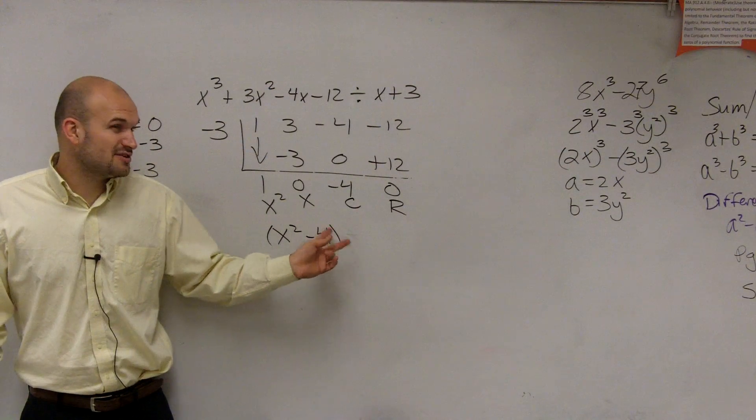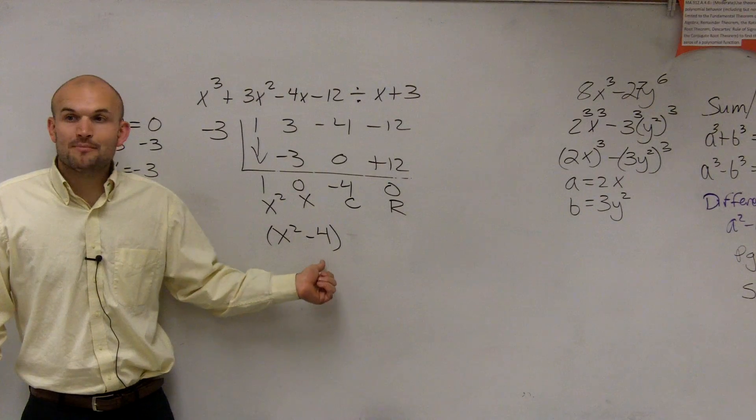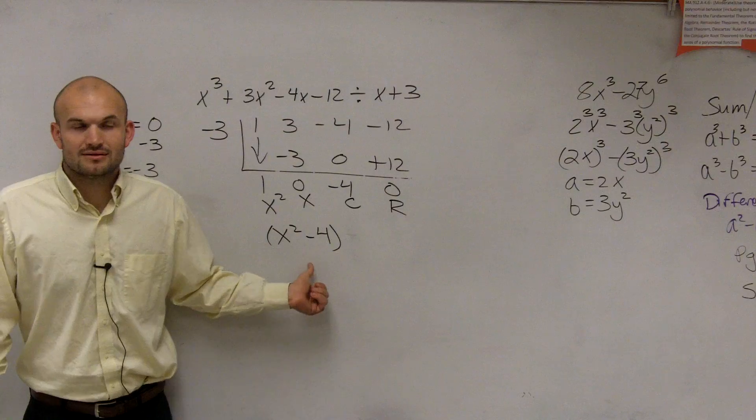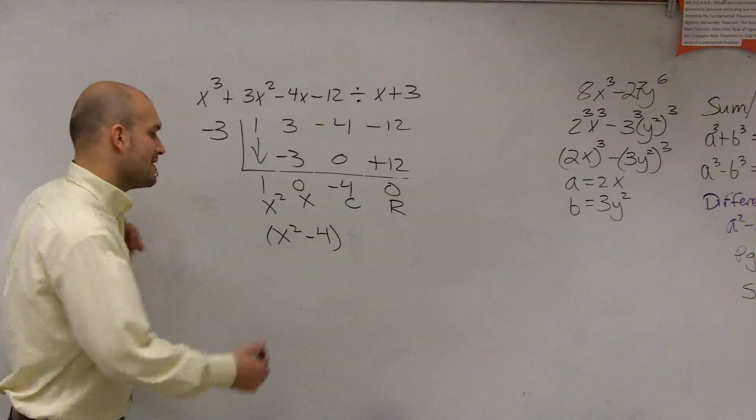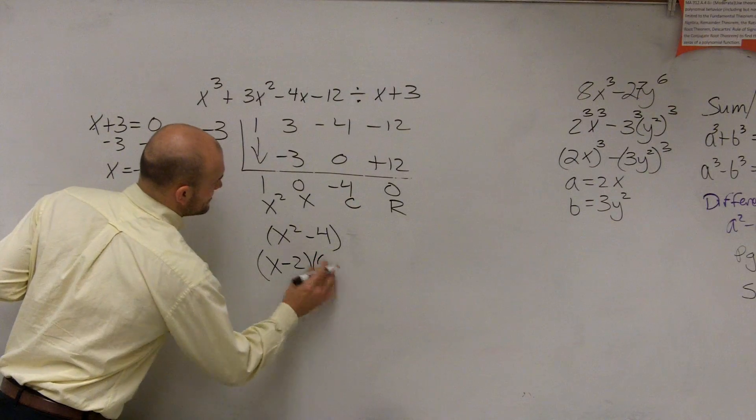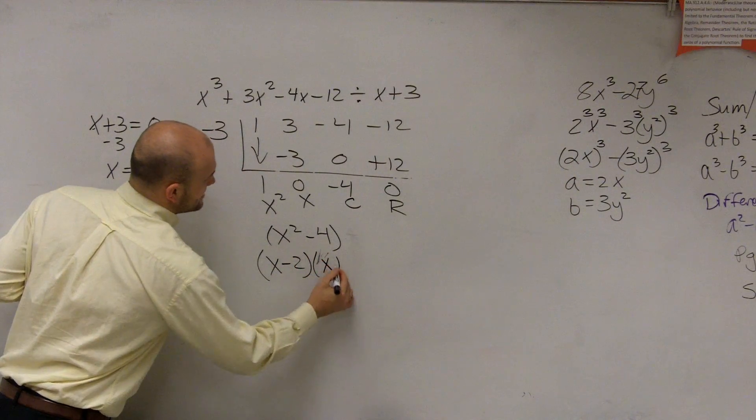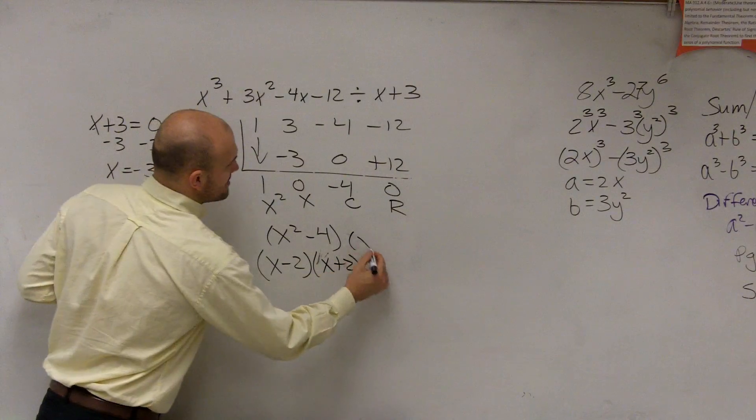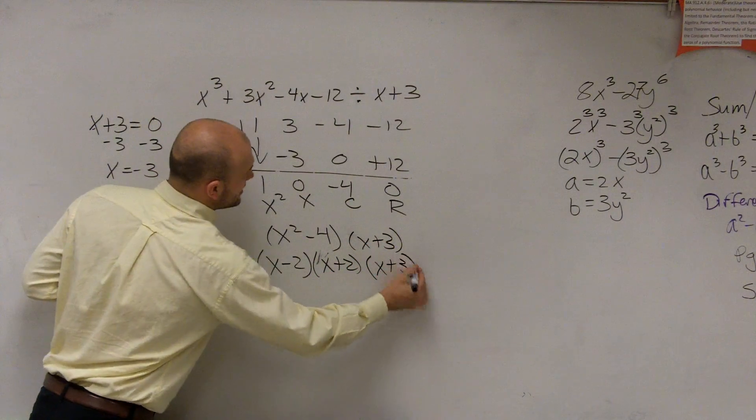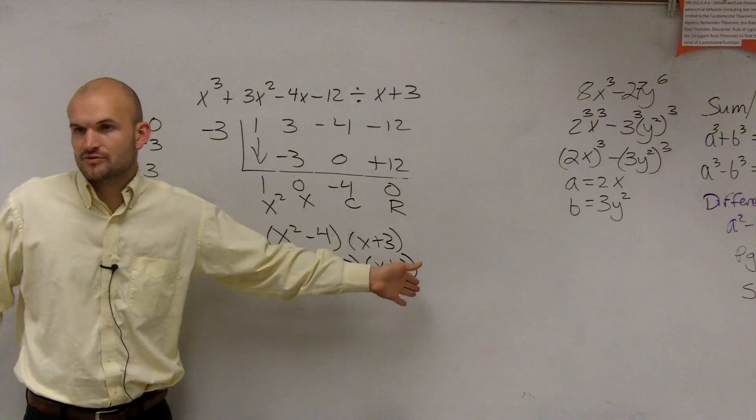Well, unfortunately, you can't take the x out of the 4, but does anybody remember what form this would be if I factor this? A difference of two squares. So we can quickly factor this to x minus 2 times x plus 2, and remember how I wrote this times x plus 3? Well, now we can just rewrite the x plus 3 here. And you could say, here's my factored form.